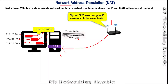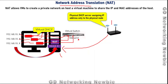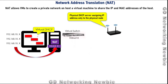All these virtual machines, using their virtual network adapters, will be connected with this virtual switch. In addition to those virtual machines, we will also have a NAT device — a network address translator — which will be translating these private IP addresses to the IP address of the physical host machine.